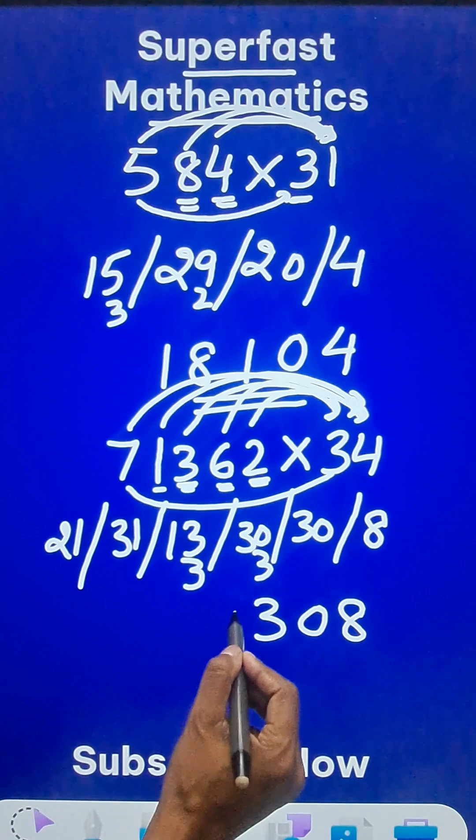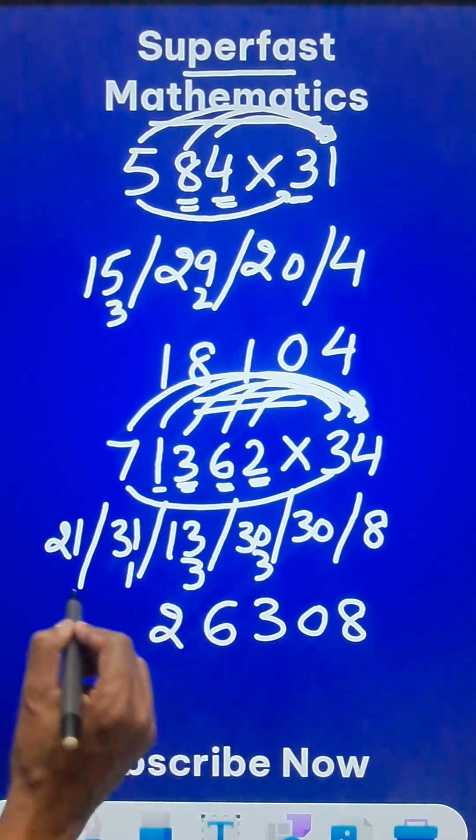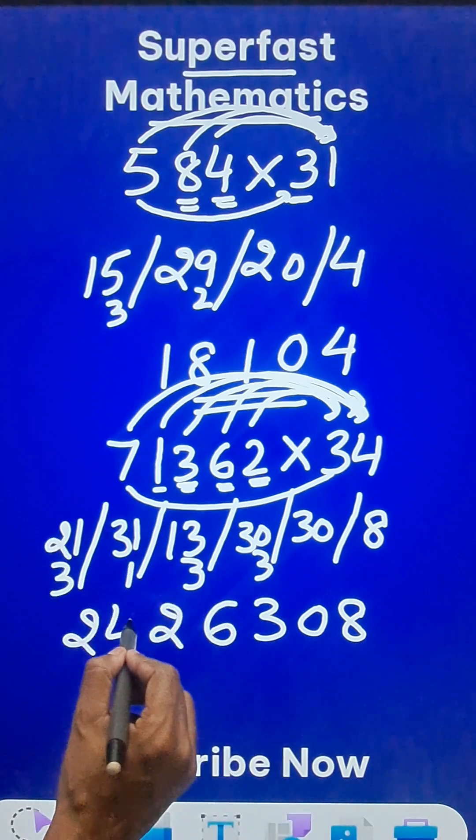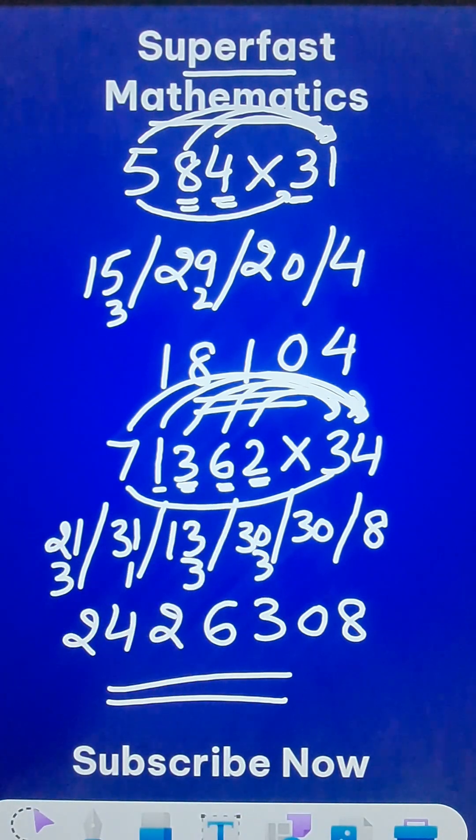33 means 3, 3 carry. 16 means 6, 1 carry. 32 means 2, 3 carry. And that makes it 24. So now pick up the calculator and check your answer.